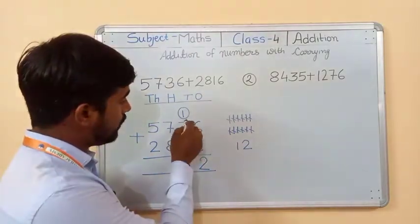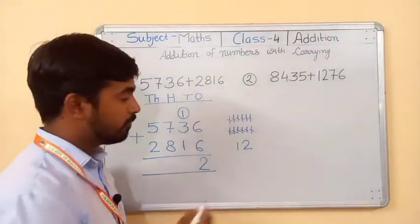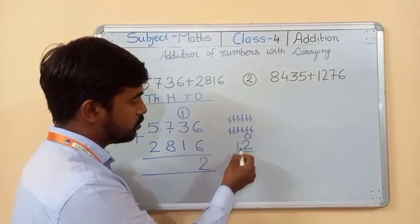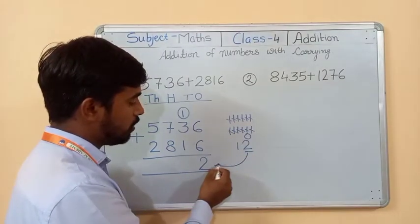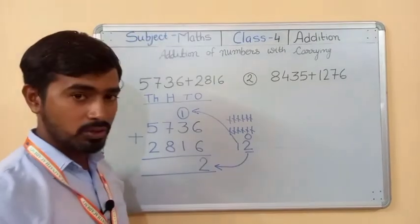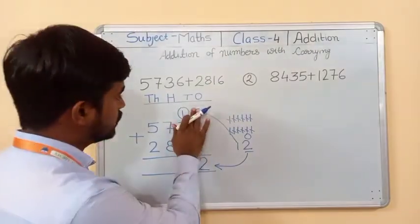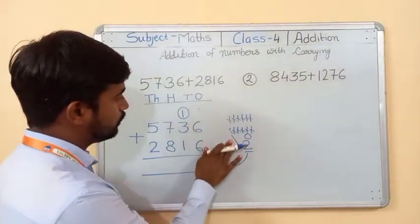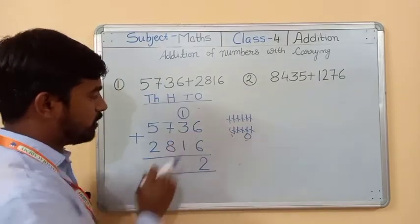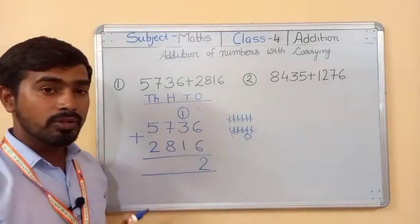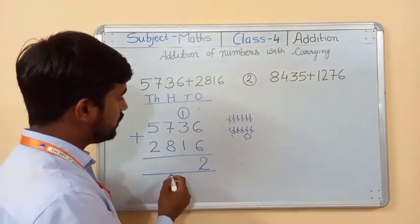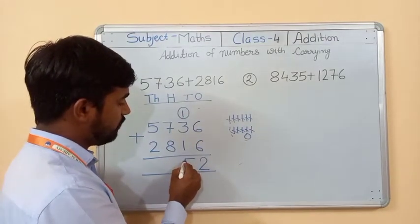This carry is on the ones column, so write the carry on the next column. Now, three plus one equals four. Four plus one carry equals five. Write five.